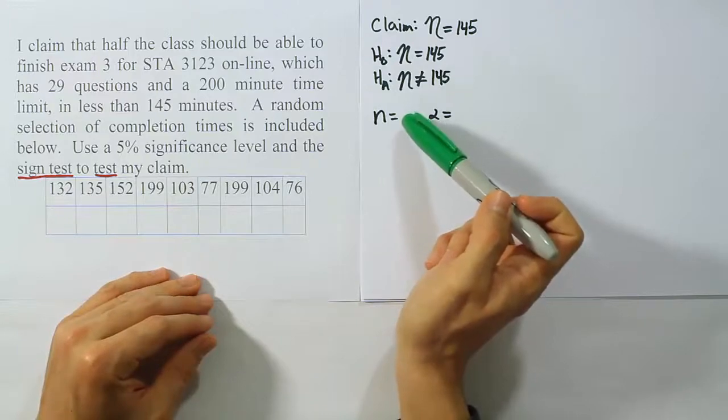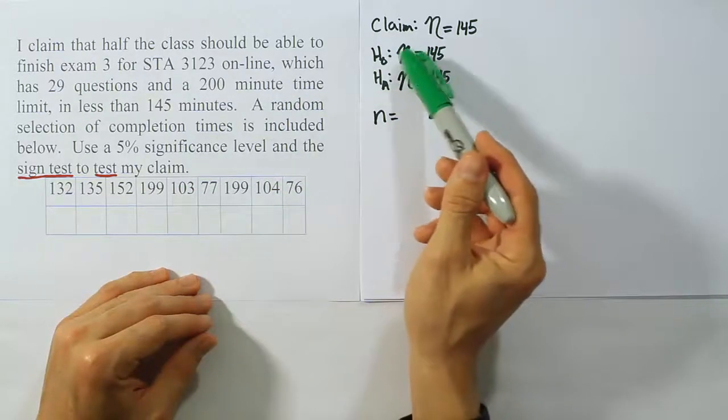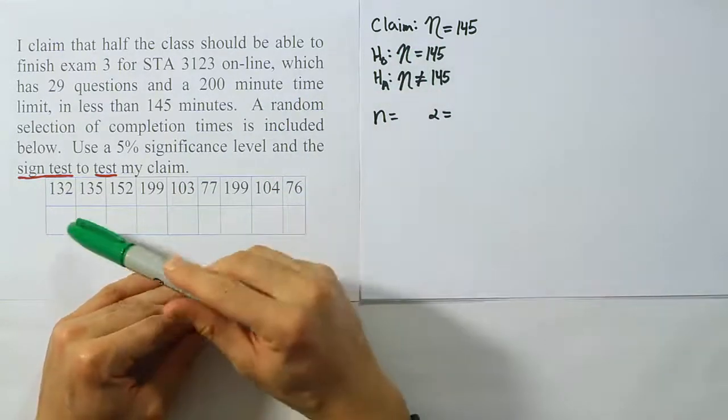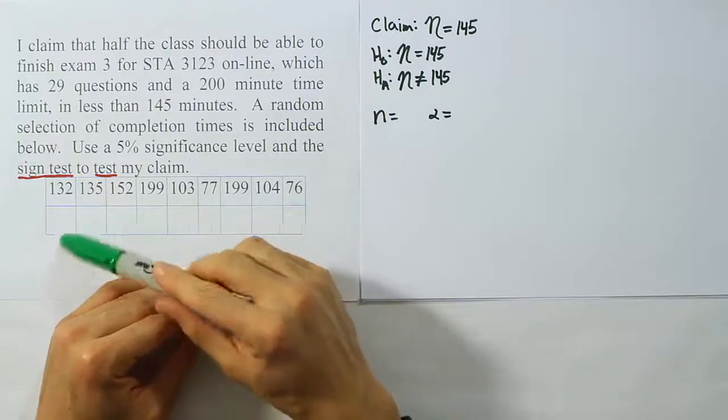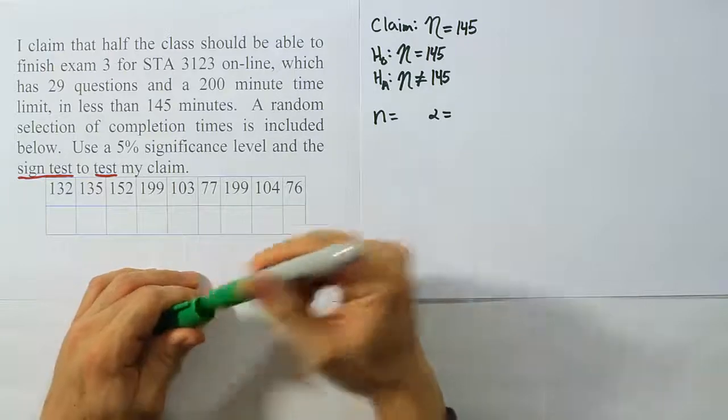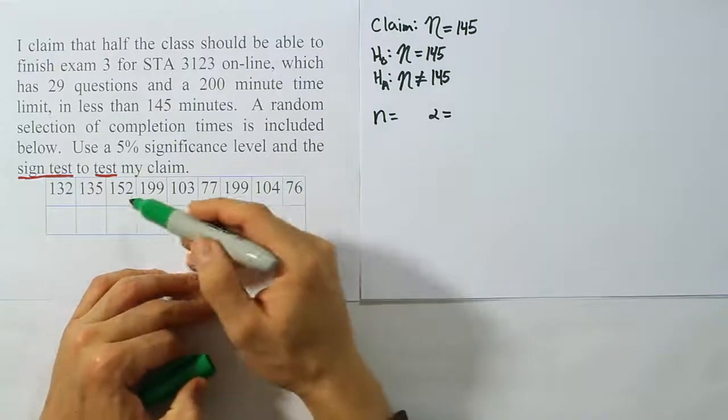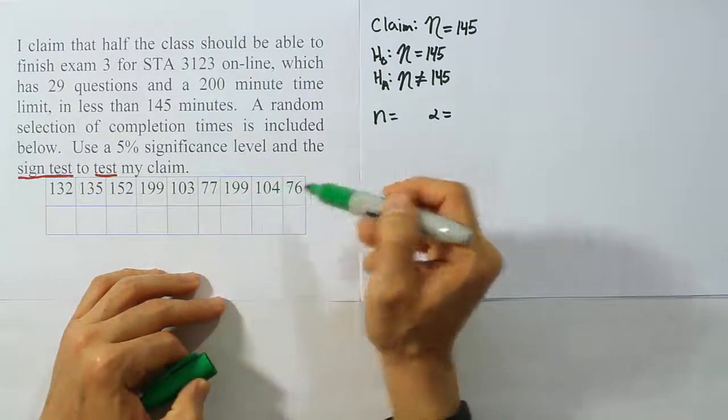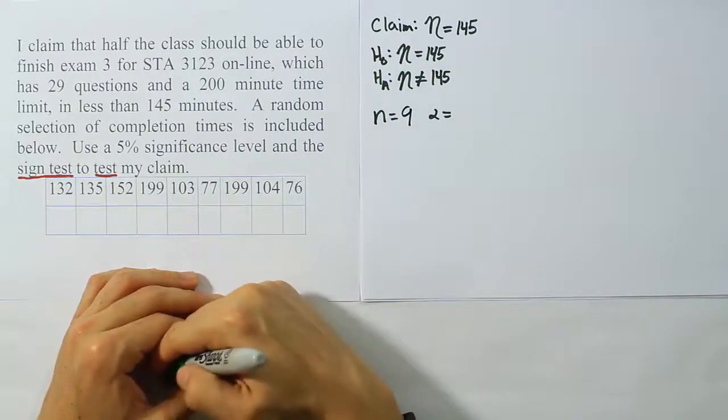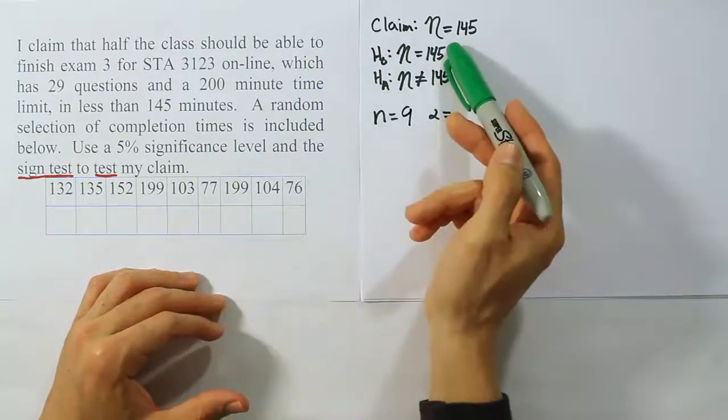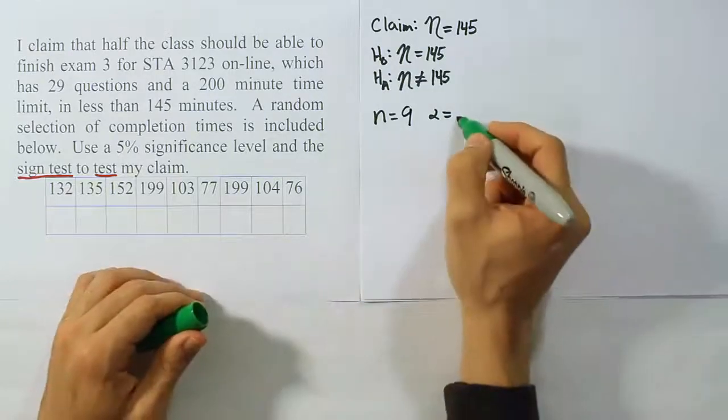So I would put 9 here, except for I want to be careful and make sure that I don't have any numbers that are equal to the value that I see in H0. Do I see any values there that are equal? I don't. So at that point, I'm going to go ahead and say N is exactly 9 here. There's no numbers that have to be discarded because they're equal to the value that I see in H0. That's good. Now, alpha is 0.05.